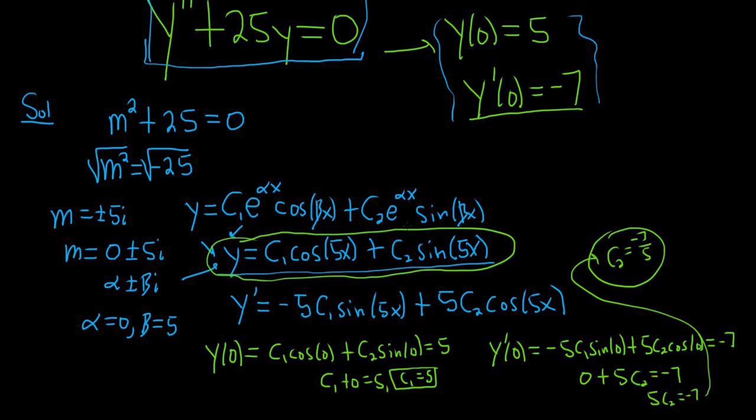Now that we have c₁ and c₂, we can plug them back into our solution. Our final answer is y equals 5cos(5x).